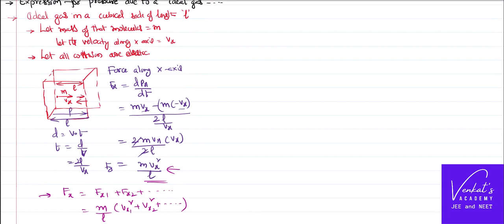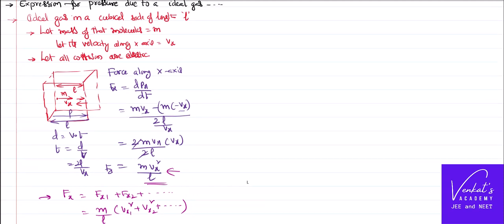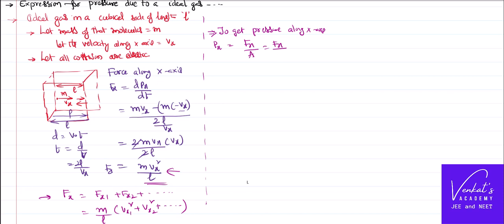Now, to calculate the pressure along the x-axis, we use pressure = force / area. Being a cube, the area is L². We already derived Fx = (M/L)(Vx1² + Vx2² + ...), so dividing by area L² gives pressure along x = (M/L³)(Vx1² + Vx2² + ...).